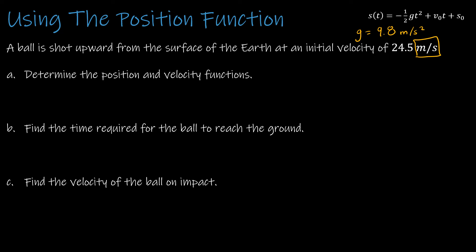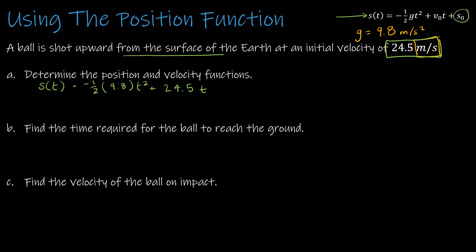Starting by finding the position and velocity functions, I'll use the template. I've got negative one-half times 9.8 for g, then t squared. The initial velocity v sub zero is given as 24.5 meters per second, so plus 24.5t. The ball is shot upward from the surface of the earth, so the starting height s sub zero is zero. After cleanup, the position function is negative 4.9t squared plus 24.5t.